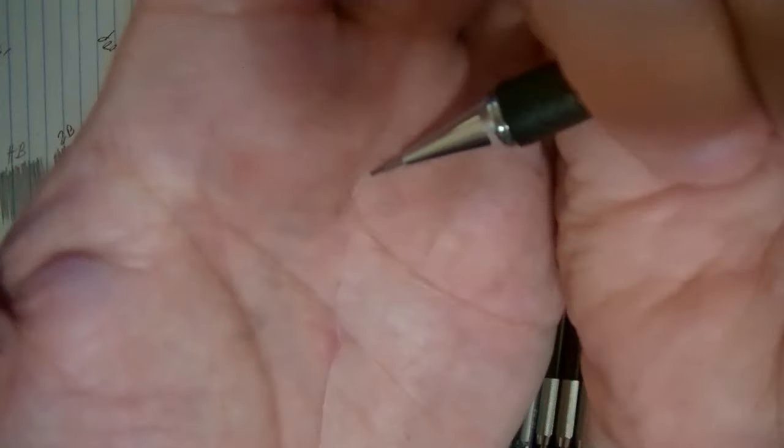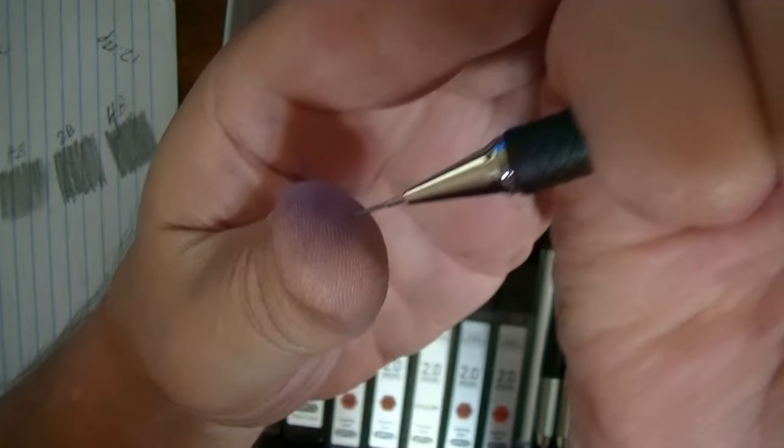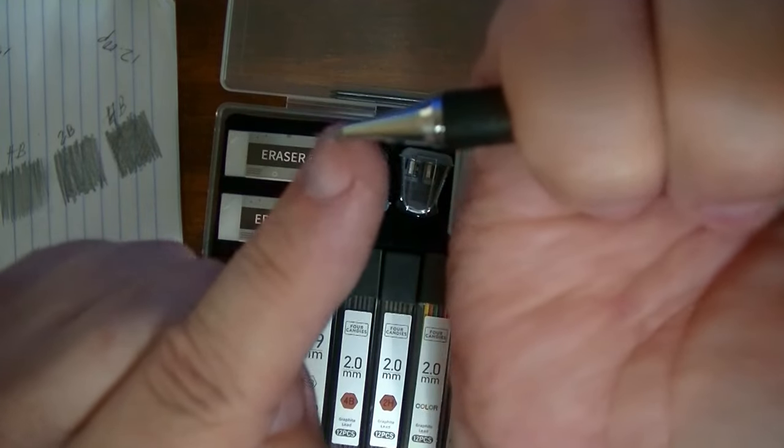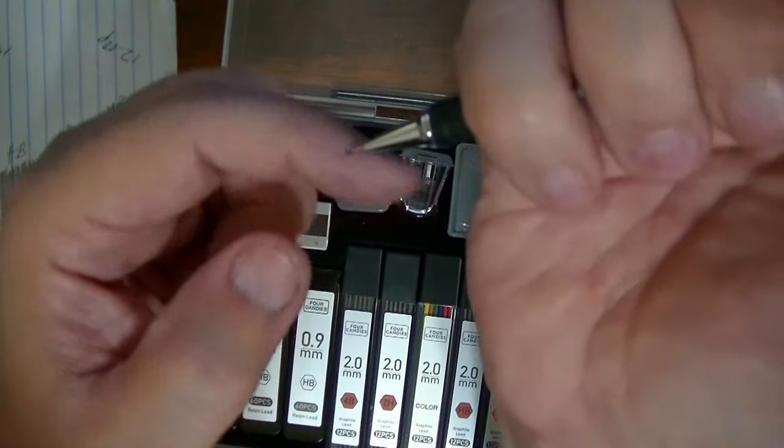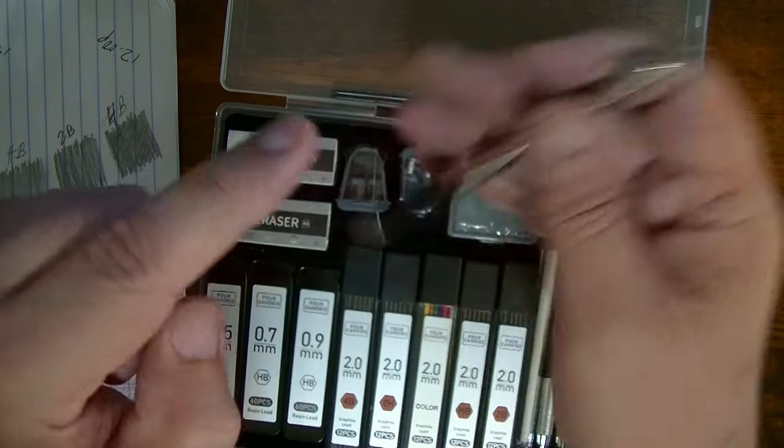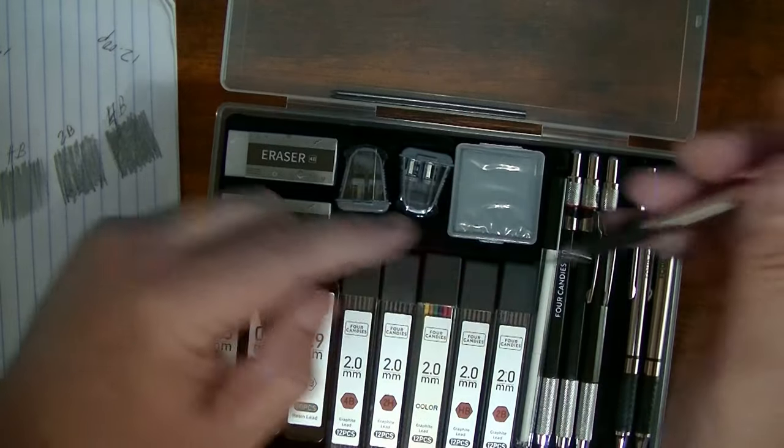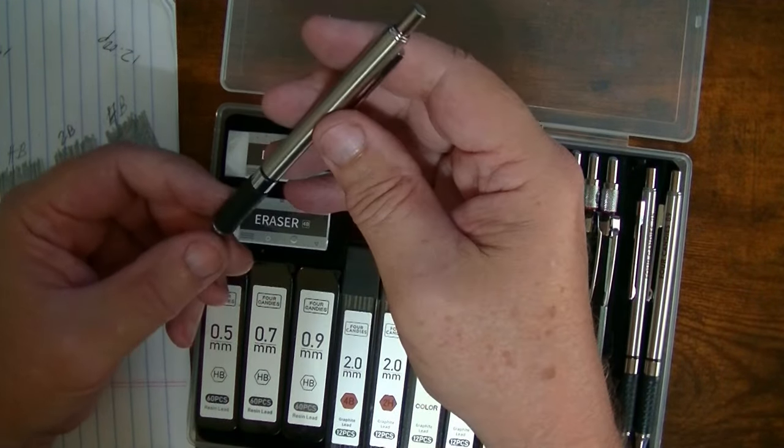So you put the little eraser back in again, put the cap in, and let's see if the lead comes out the other end again. Yes, it does. There it is. Because this hole is a little smaller than the 2.0s, you might find it easier to put it in here than to put it in here like I did with those. Something to keep in mind.